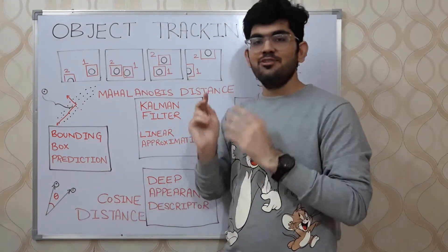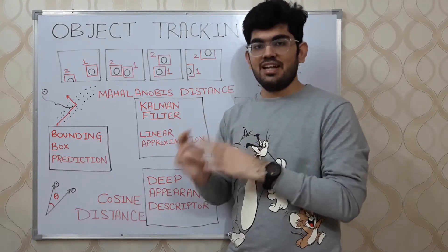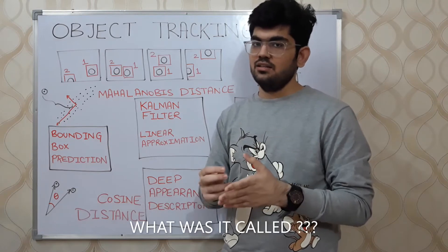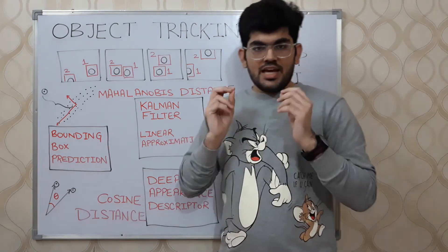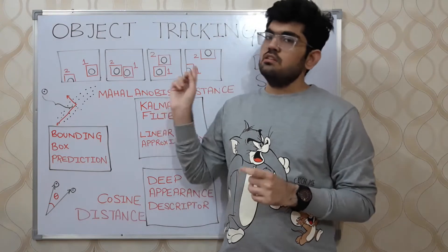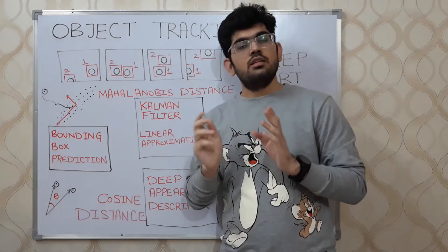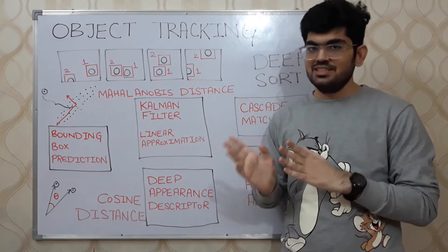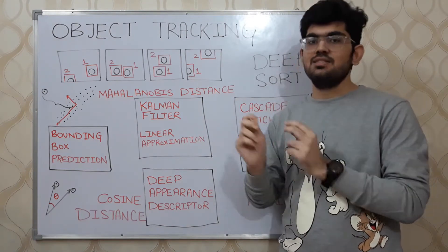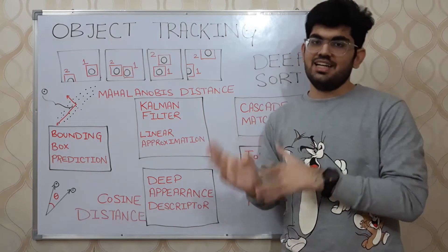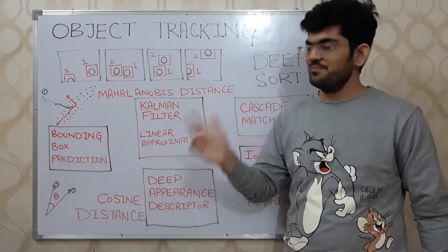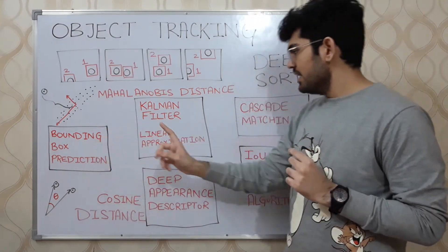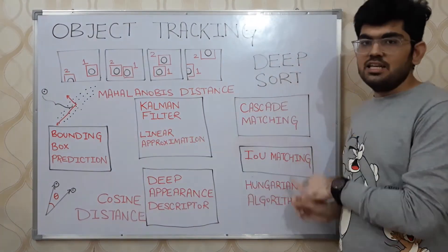In our case it would be traffic tracking — we need to keep track of the different cars moving around our autonomous vehicle. The algorithm we are going to use is called the deep sort algorithm. Before discussing deep sort, we first start with the simple sort algorithm. SORT stands for Simple Online Real-Time Tracking, and the simple sort algorithm uses bounding box prediction, Kalman filters, and IOU matching techniques.